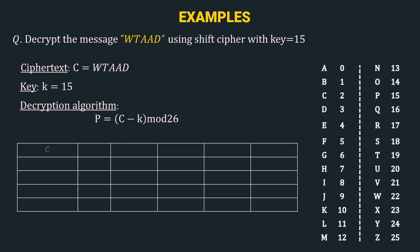The first row is the ciphertext, so we input each alphabet of the ciphertext. The next operation is the numerical value of C — referring to the mapping table, we get the corresponding numerical values. The next operation is C − K, that is we subtract the key K from each alphabet in the ciphertext. So 22 − 15 = 7, 19 − 15 = 4, and similarly we calculate all other values.